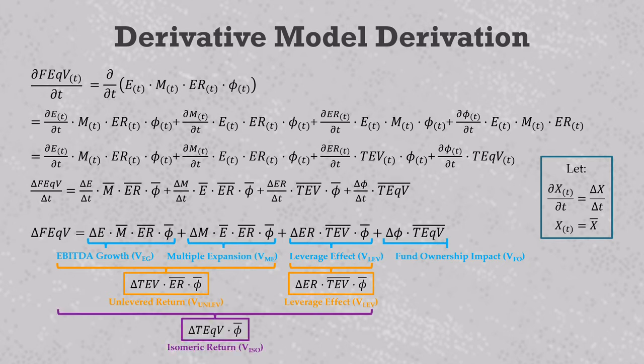Now these two value drivers, the unlevered return and the leverage effect, they combine to form the isomeric return. This is basically the hypothetical dilution neutral return, or what would have happened if the GP's share of company equity did not change over the holding period. And it is the mirror image of fund ownership impact, which is the influence of dilution or concentration on the GP's return. This word isomeric, it's from the Greek, and it roughly means equal shares. It's in the spirit of scientific terms like isomer, isotherm, and isobar that you might find in chemistry and physics.